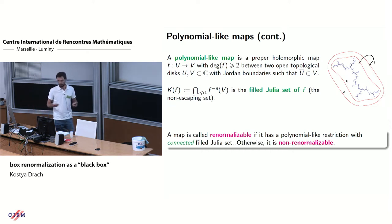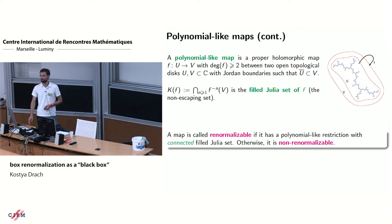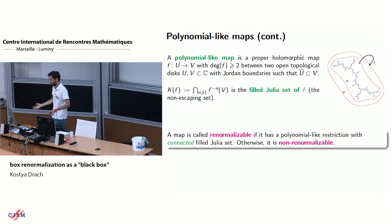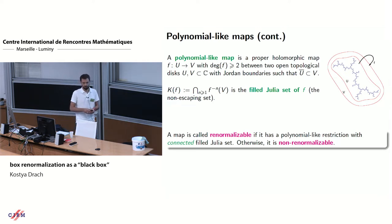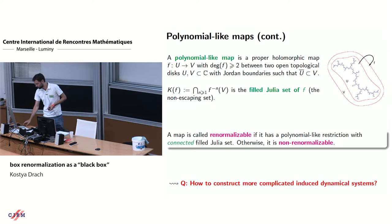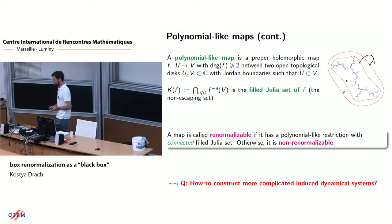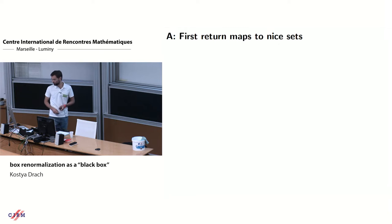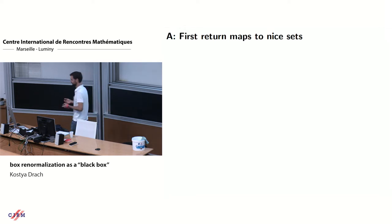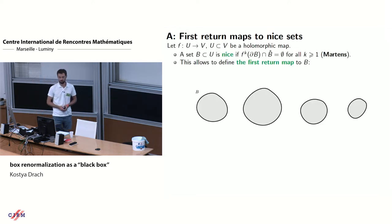With this notion we can define renormalization. A map is called renormalizable if you can find a polynomial-like restriction such that the filled Julia set is connected, and non-renormalizable if there are no such restrictions. However, it's not always possible to find a disk to which your critical point returns in some multiple iterate. The question is: what do we do in this case? And what do we do if there are many critical points that interact and accumulate at each other? The answer is to consider first return maps to nice sets.